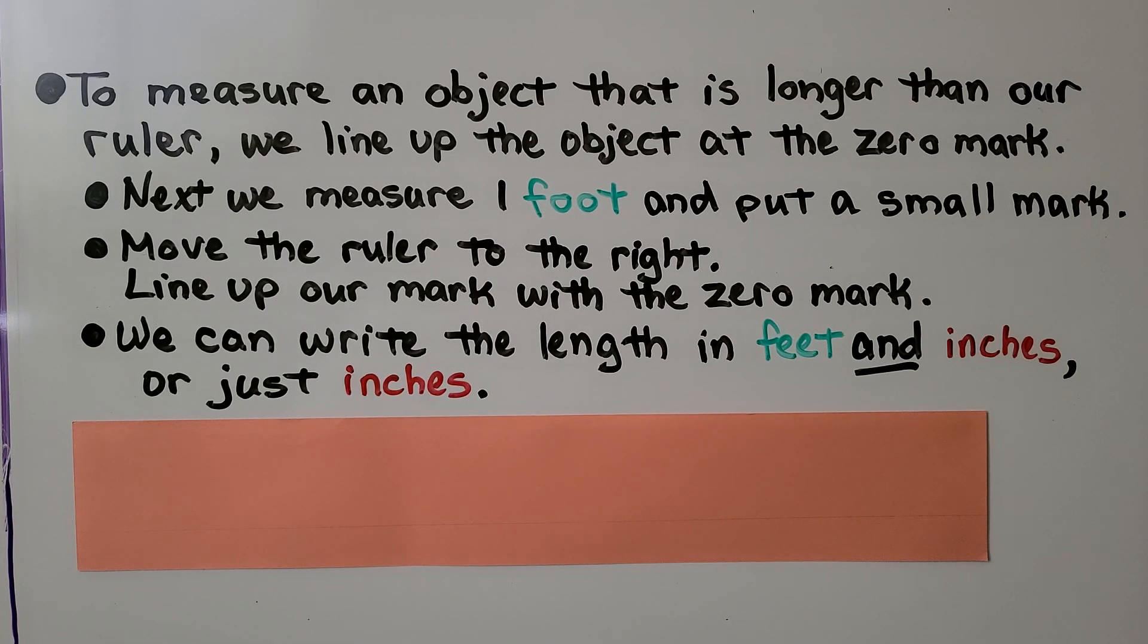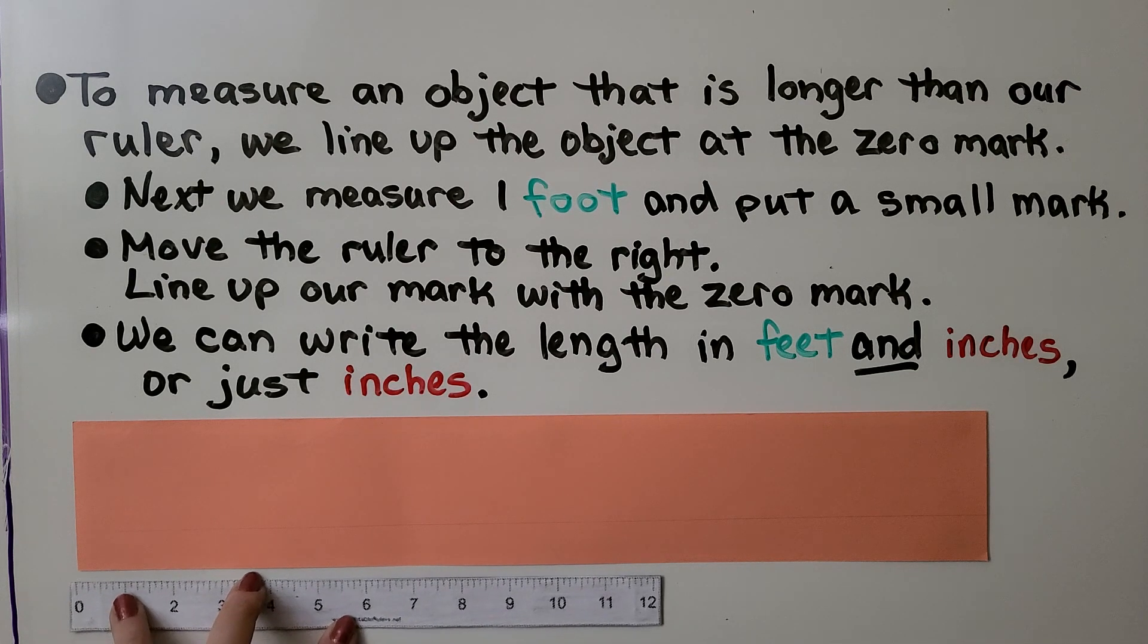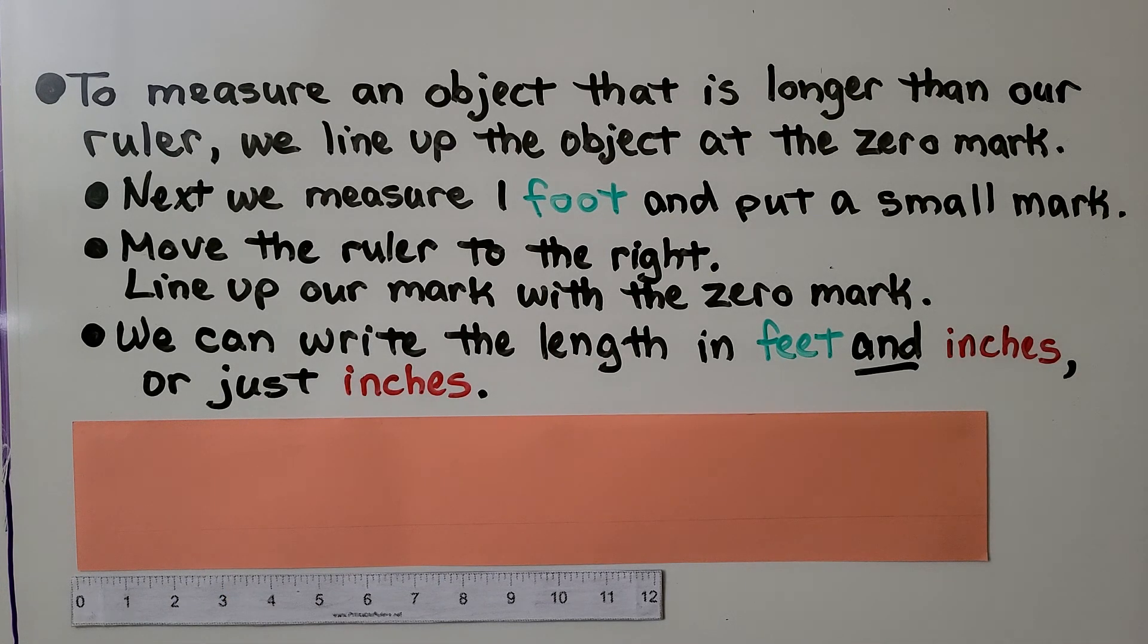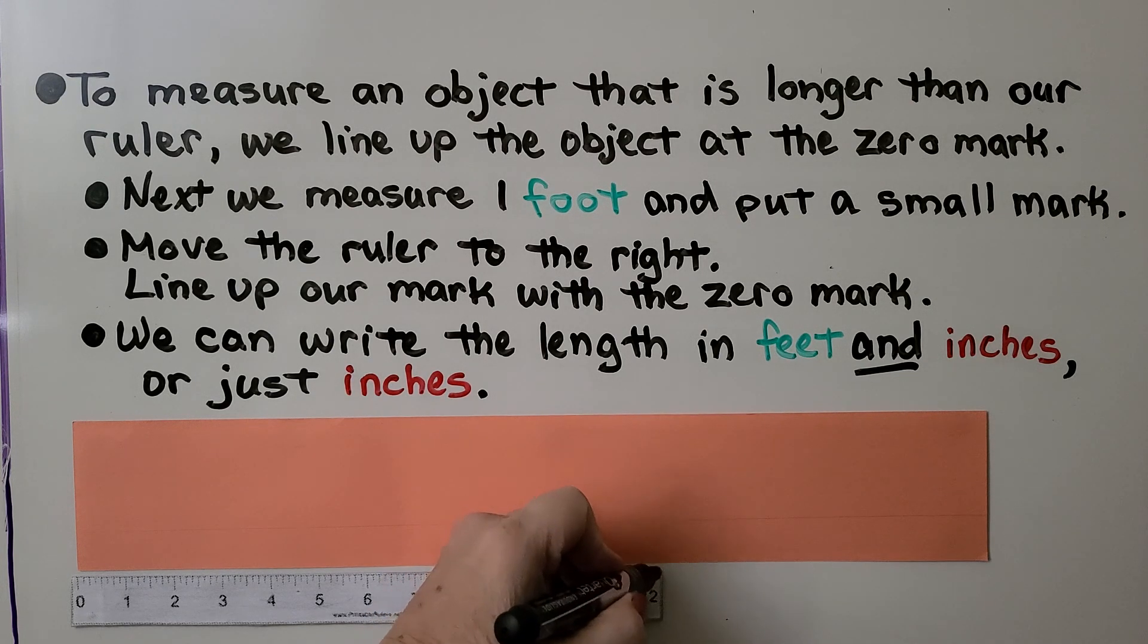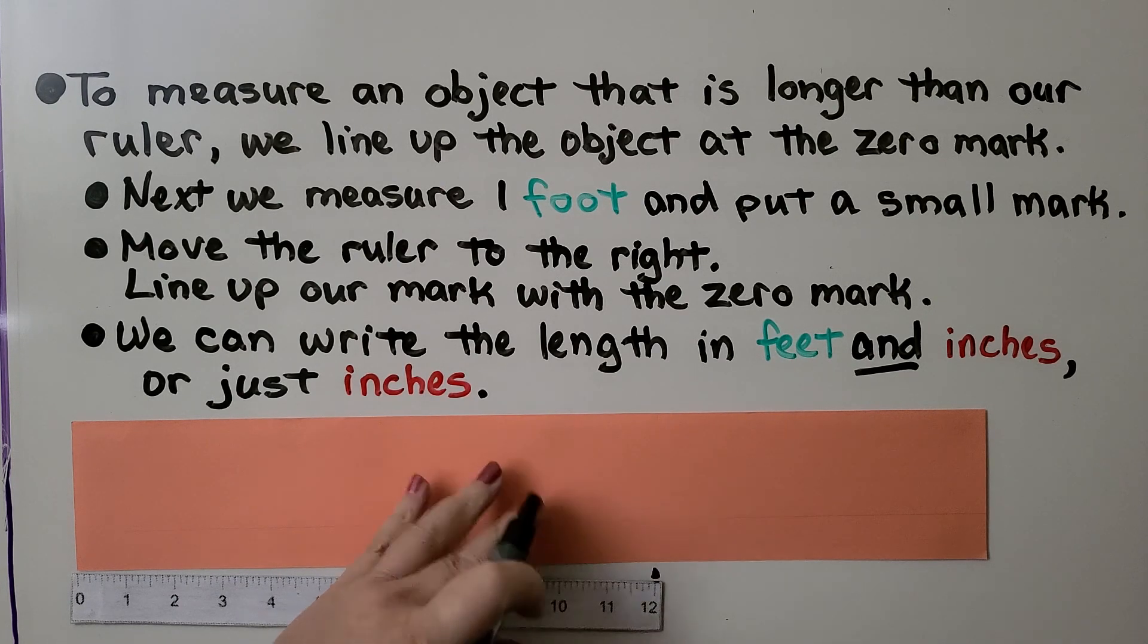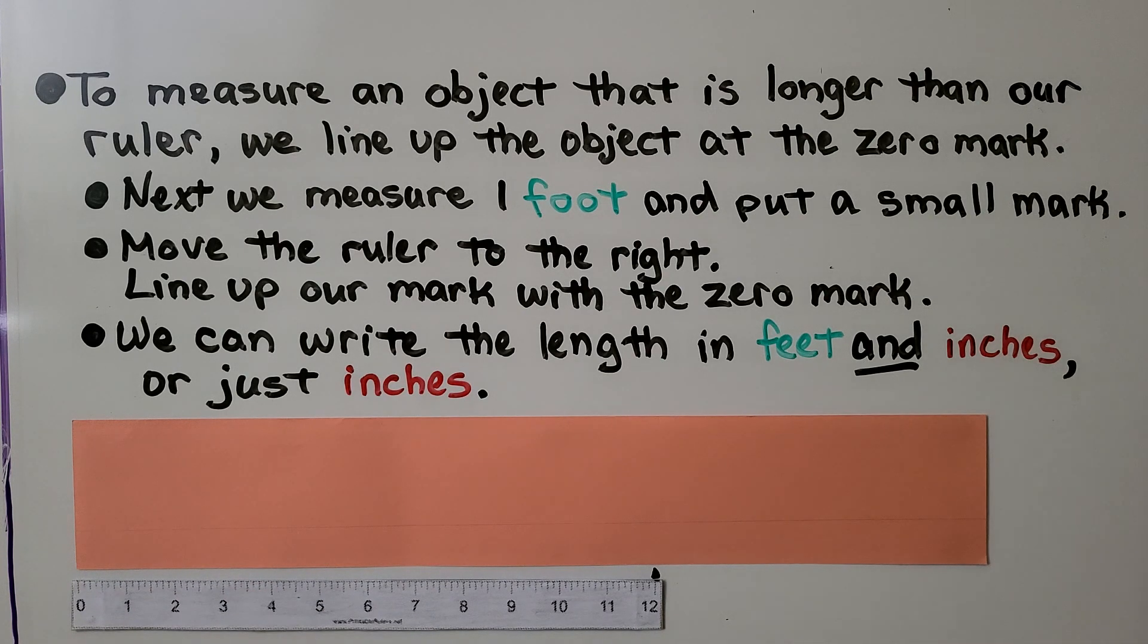To measure an object that is longer than our ruler, we line up the object at the zero mark. We're going to find the zero mark on our ruler and line up the edge of the object with the zero mark. Next, we measure one foot and put a small mark. That would be at the 12 inches, right here. So we put a little mark. That's the 12 inch mark, that's one foot.